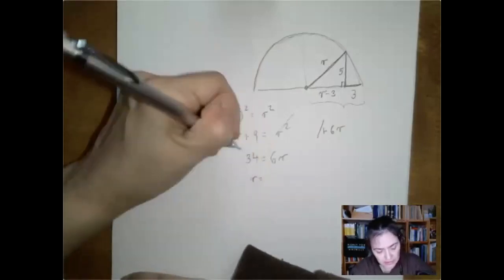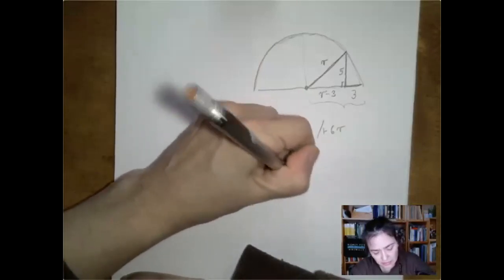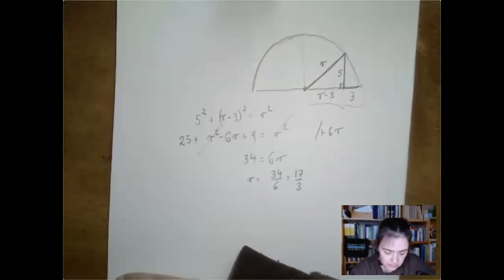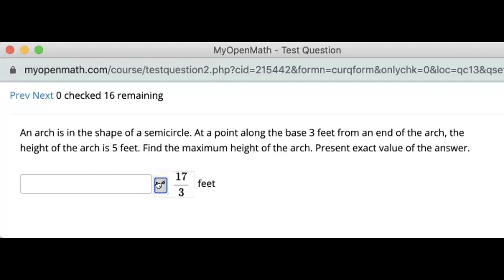And so r is 34 divided by 6 or 17 over 3. It's just shy of six, five and two thirds. Let me check. We got the right answer, 17 over 3.